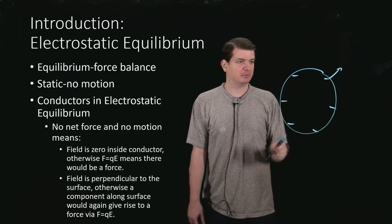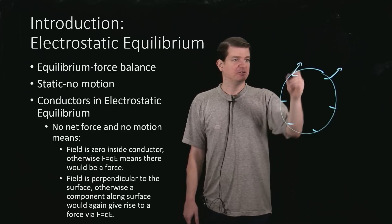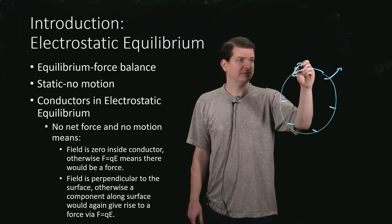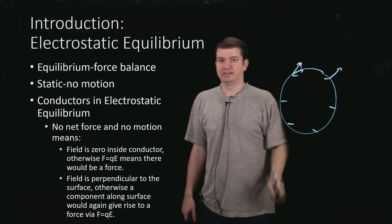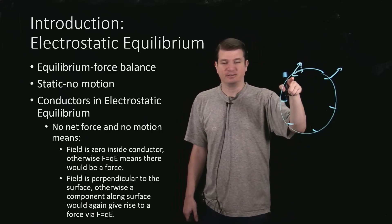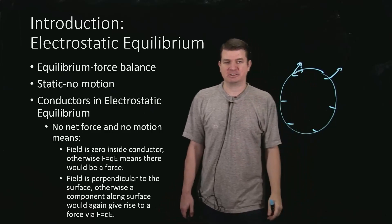if the field was maybe this way over here, then you could decompose that into a component that's actually along the direction sort of inside the conductor, which means this thing experiences a force and would move, and again, it wouldn't be electrostatic equilibrium.